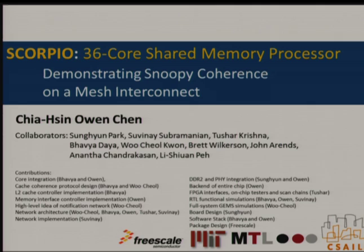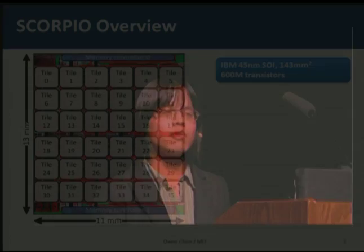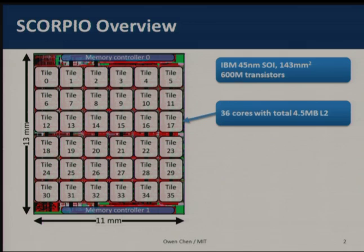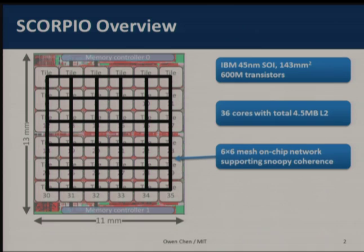Scorpio is an acronym for Snoopy Coherence Research Prototype with Interconnect Ordering. Scorpio is a general-purpose multiprocessor with 36 cores or 36 tiles. The chip is 11mm by 30mm in size and has around 600 million transistors, implemented in 45nm SOI technology. Scorpio supports unified shared memory and uses Snoopy coherence to maintain cache coherency, with all 36 tiles interconnected using a 2D mesh network.